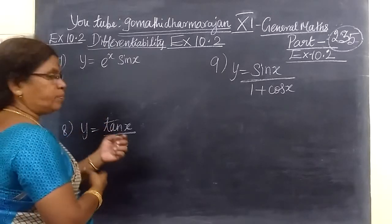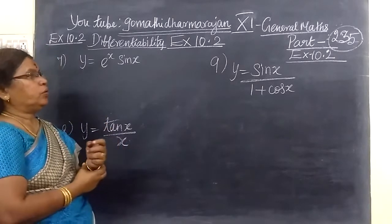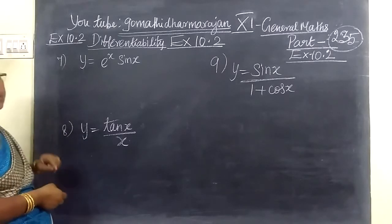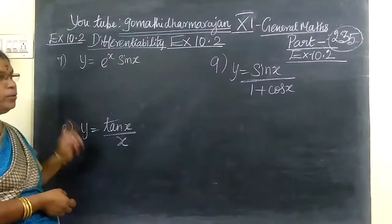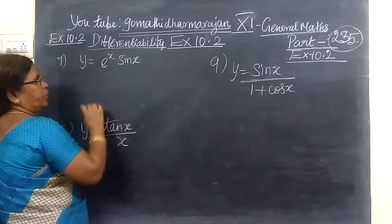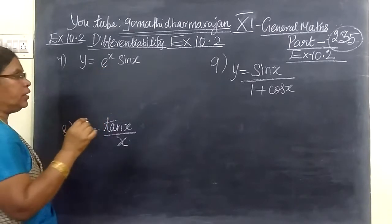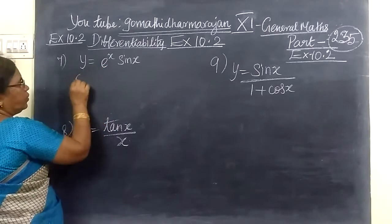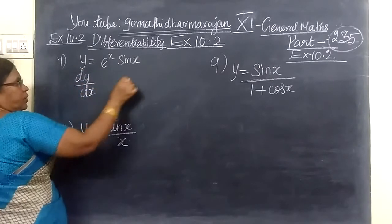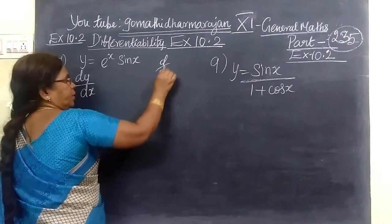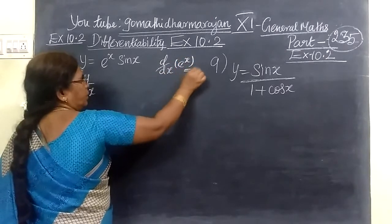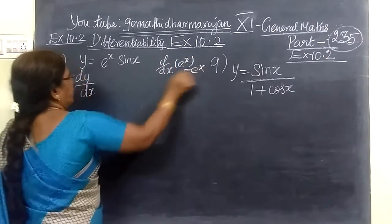Last time we had a question to complete. Question number 7 in Exercise 10.2: we are given y equal to e power x times sin x. We are going to find dy by dx. We know d by dx of e power x is nothing but e power x.